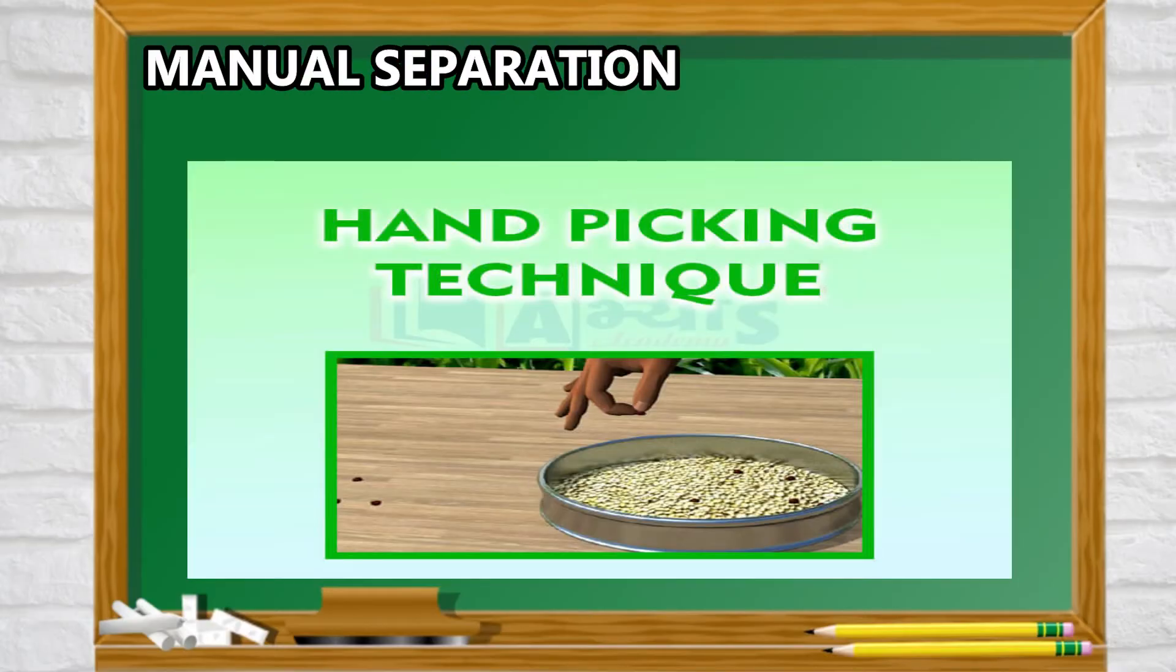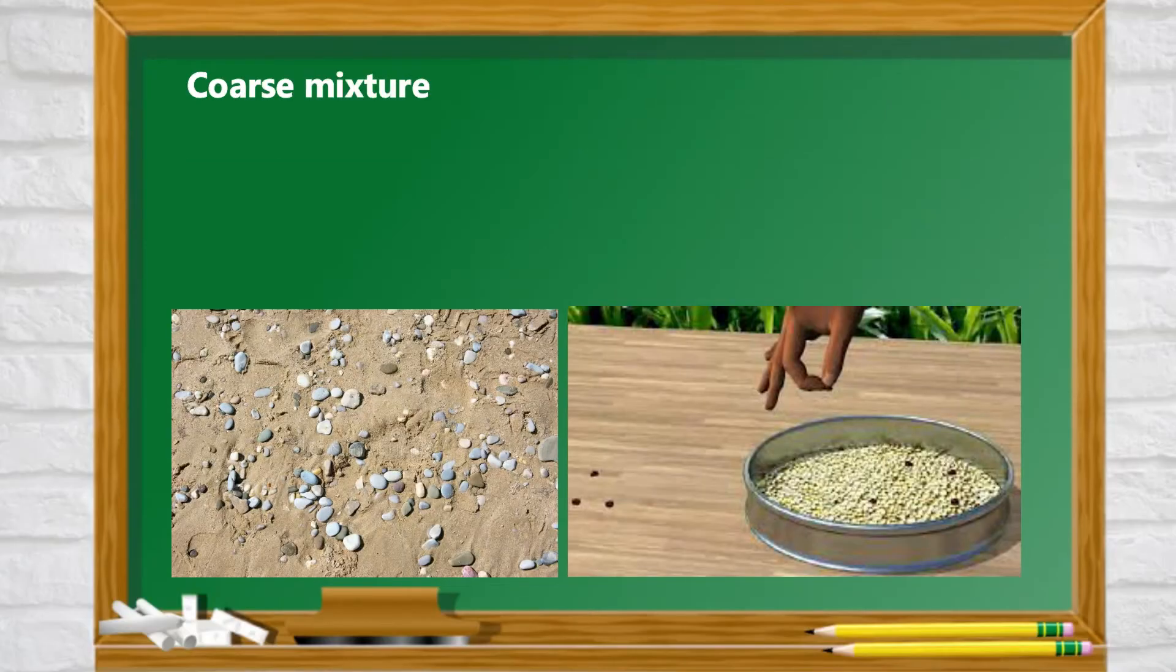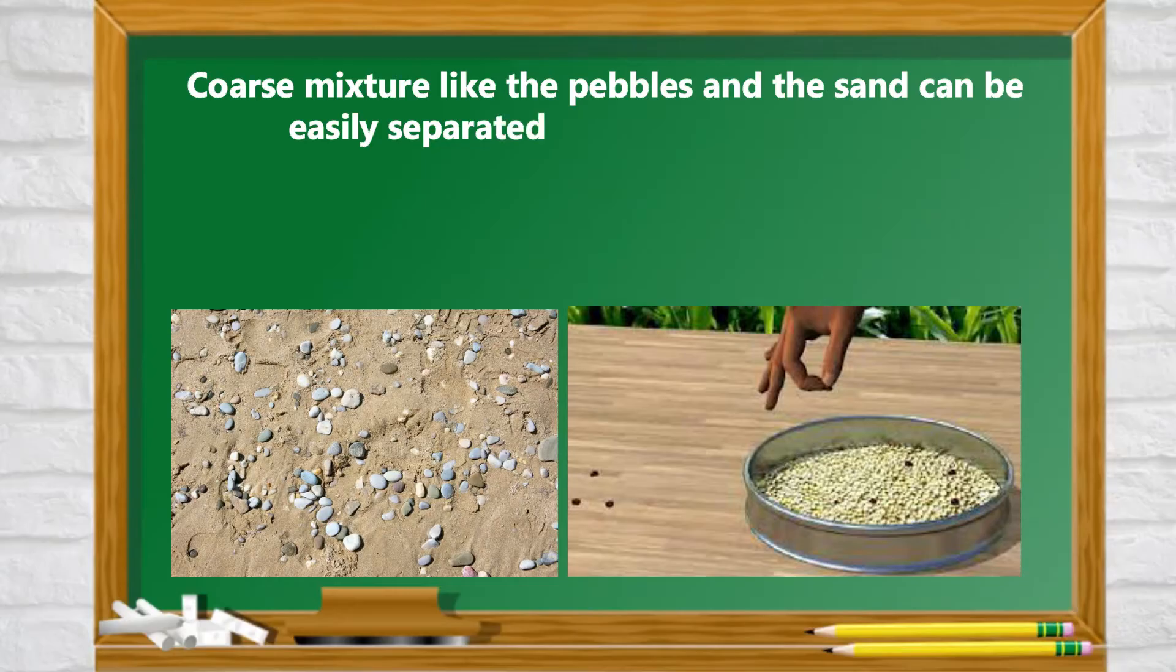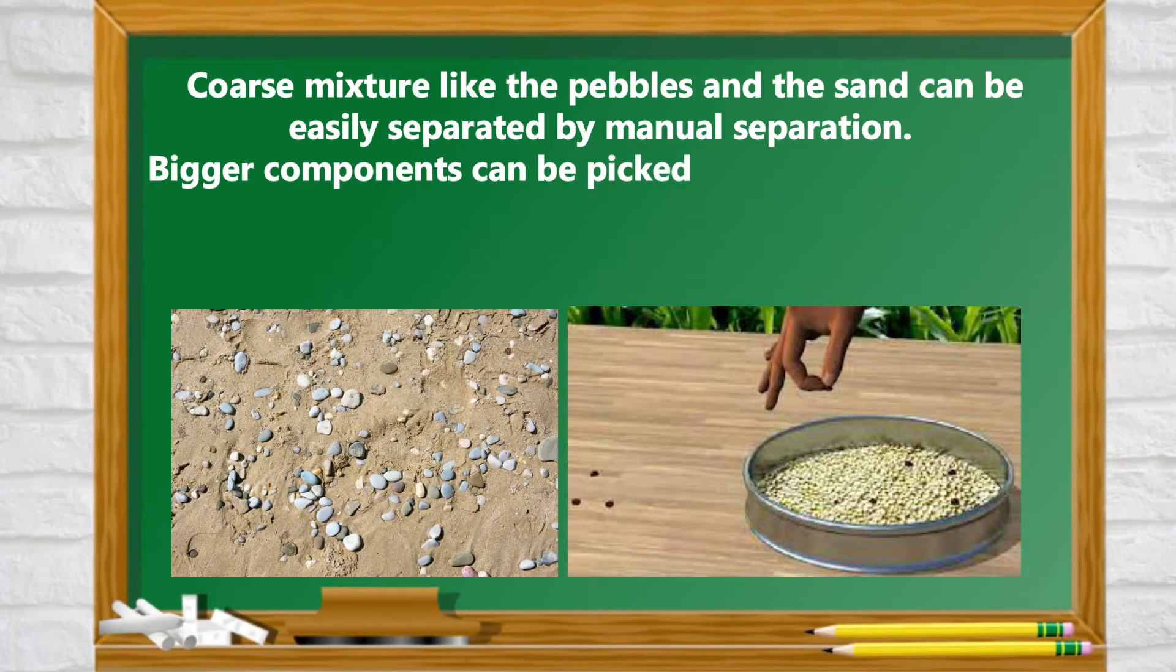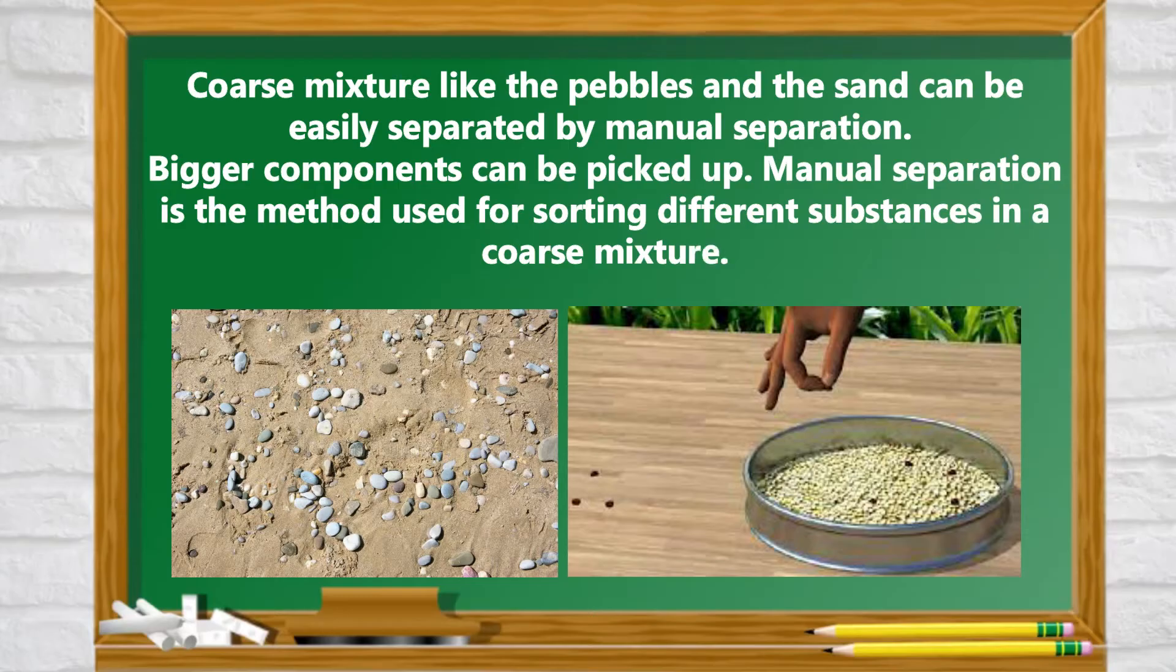Manual Separation Technique or Hand Picking. Coarse mixtures like pebbles and sand can be easily separated by manual separation. Bigger components can be picked up. Manual separation is the method used for sorting different substances in coarse mixture.